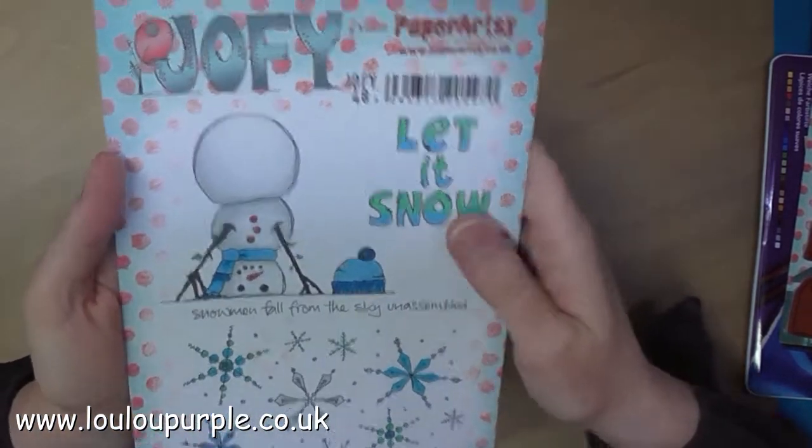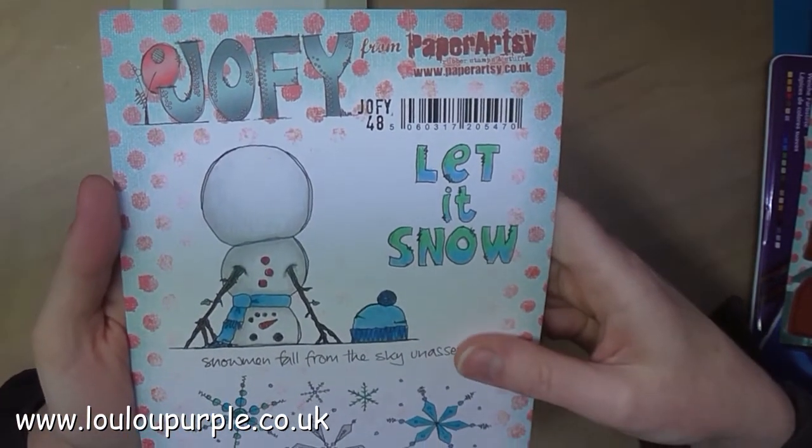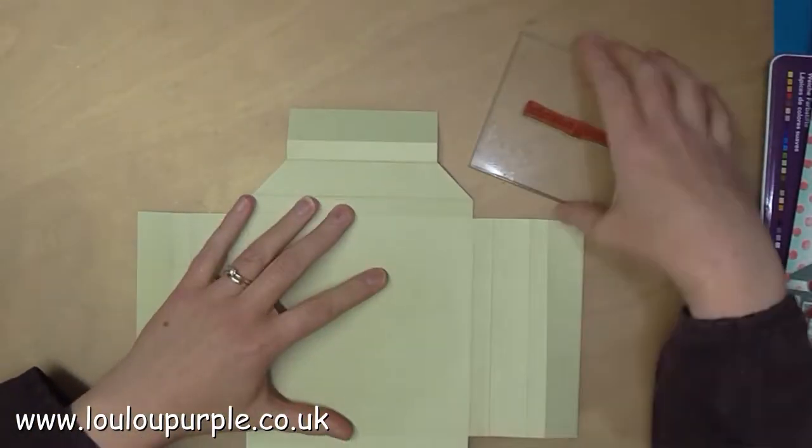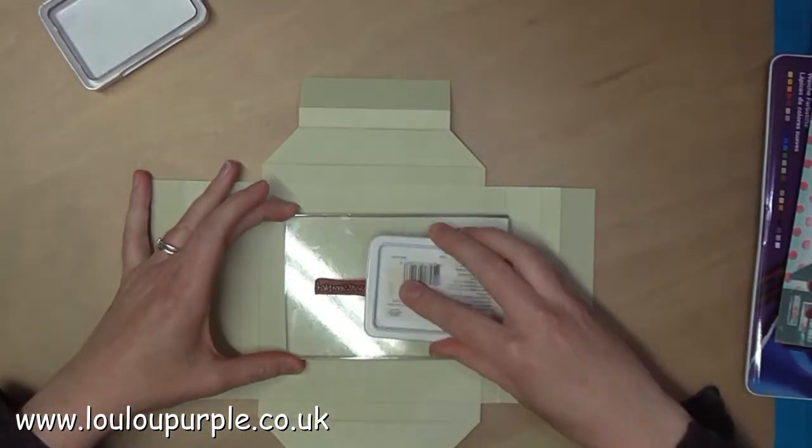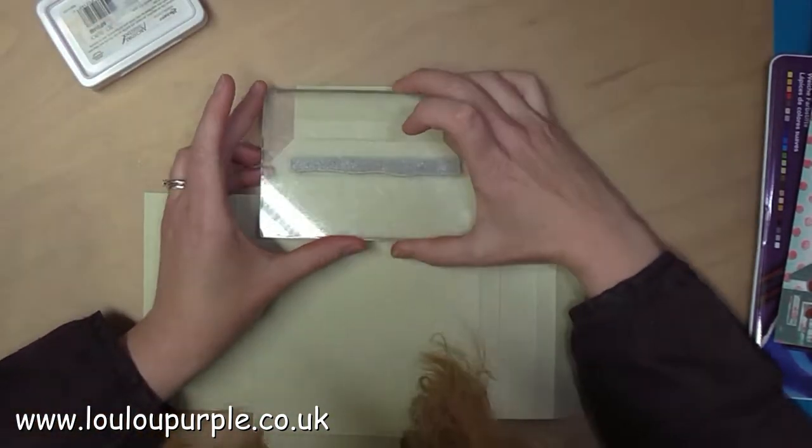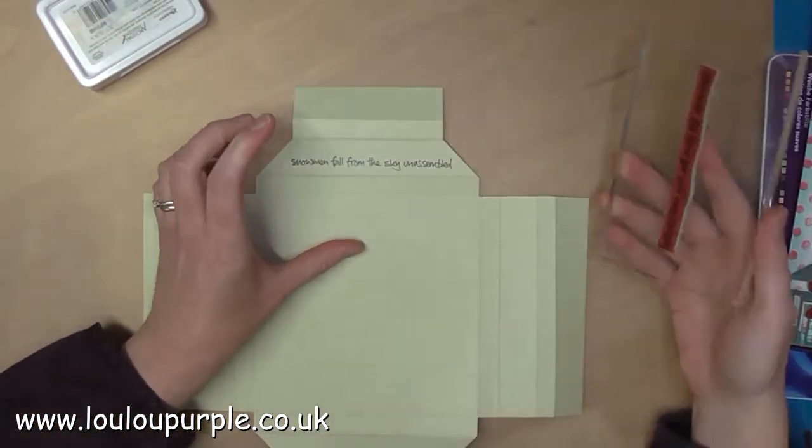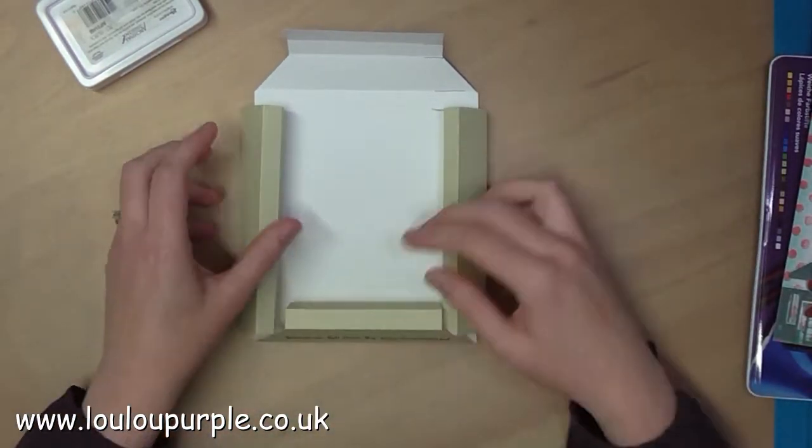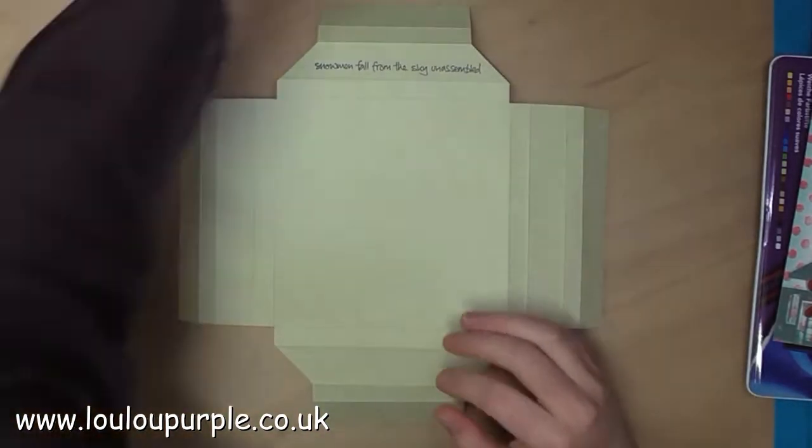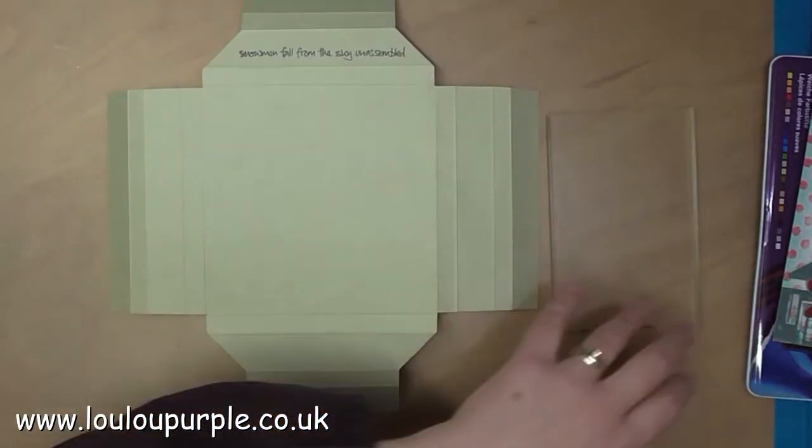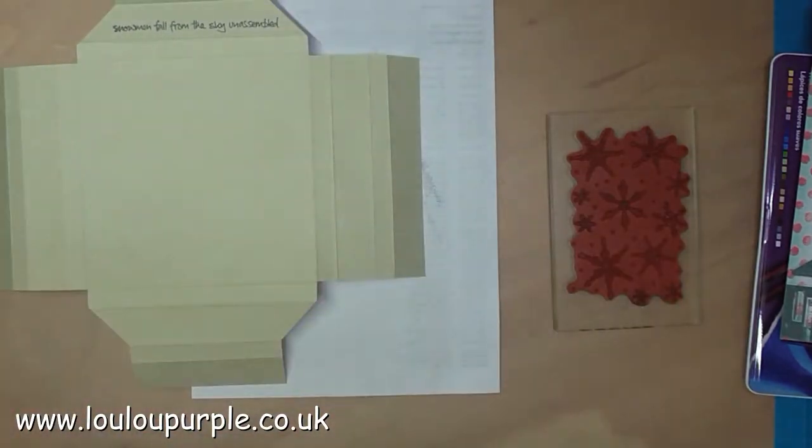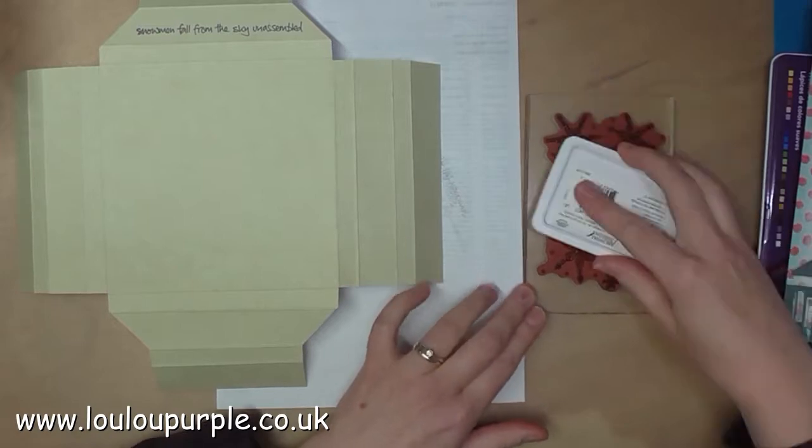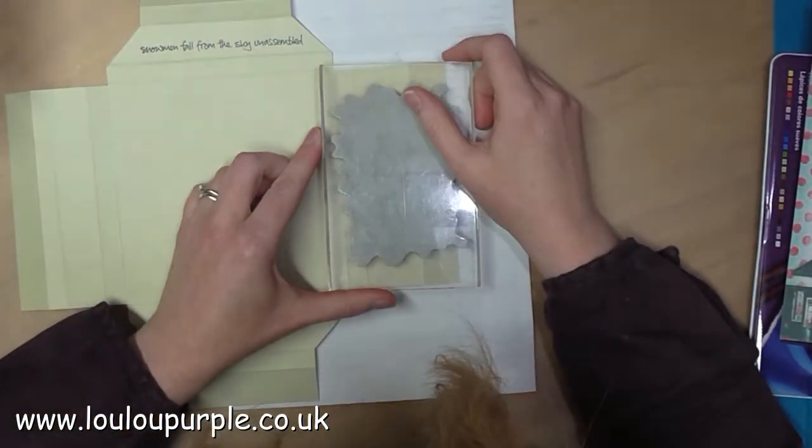I am now going to use the Paper Artsy Stamps Jophie 48. I am going to be using my black archival ink pad for stamping this saying. For the snowflakes I am going to be using my archival ink forget me not.